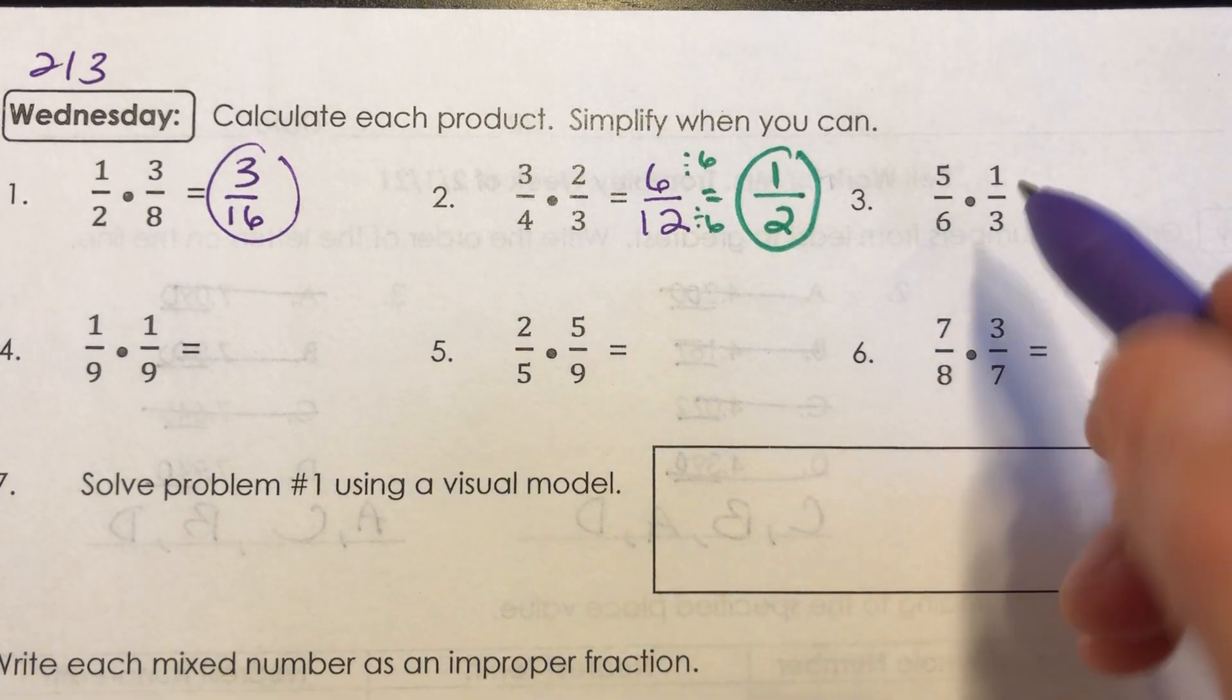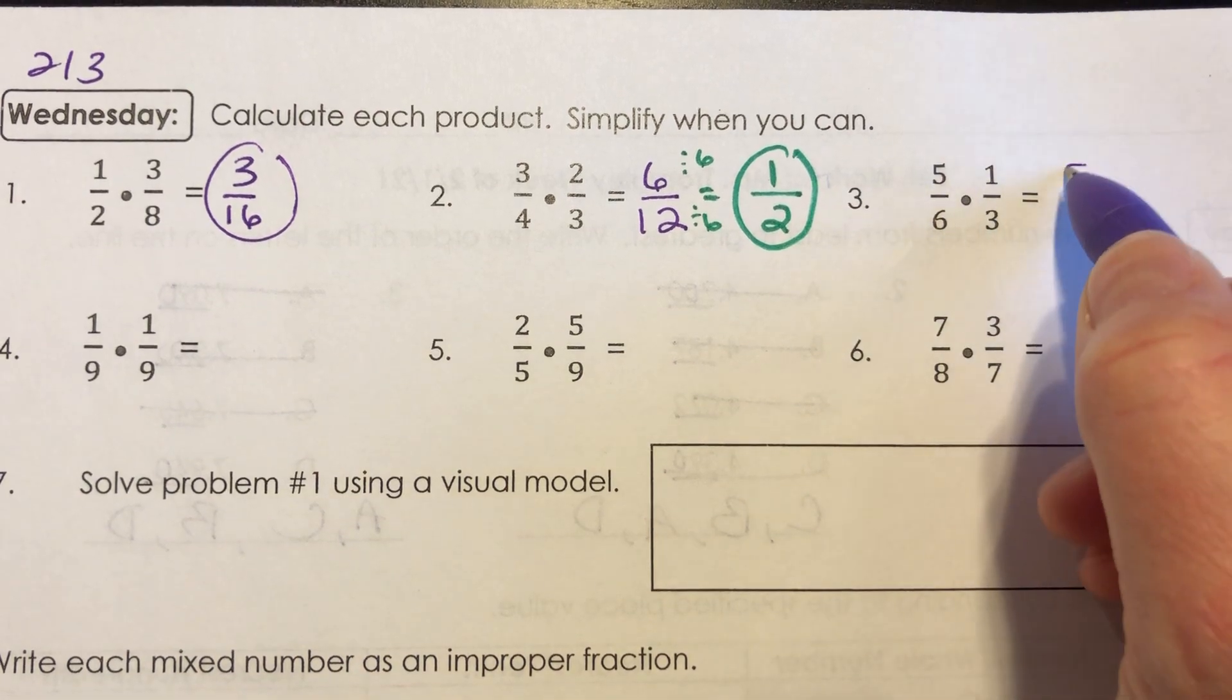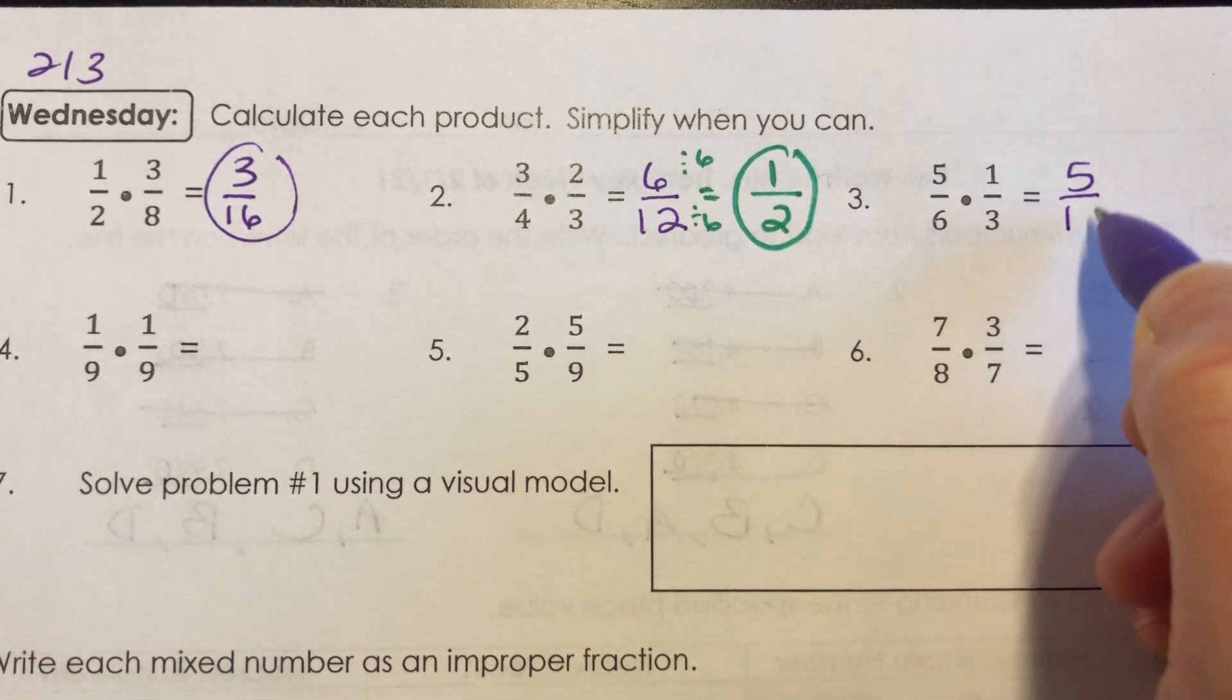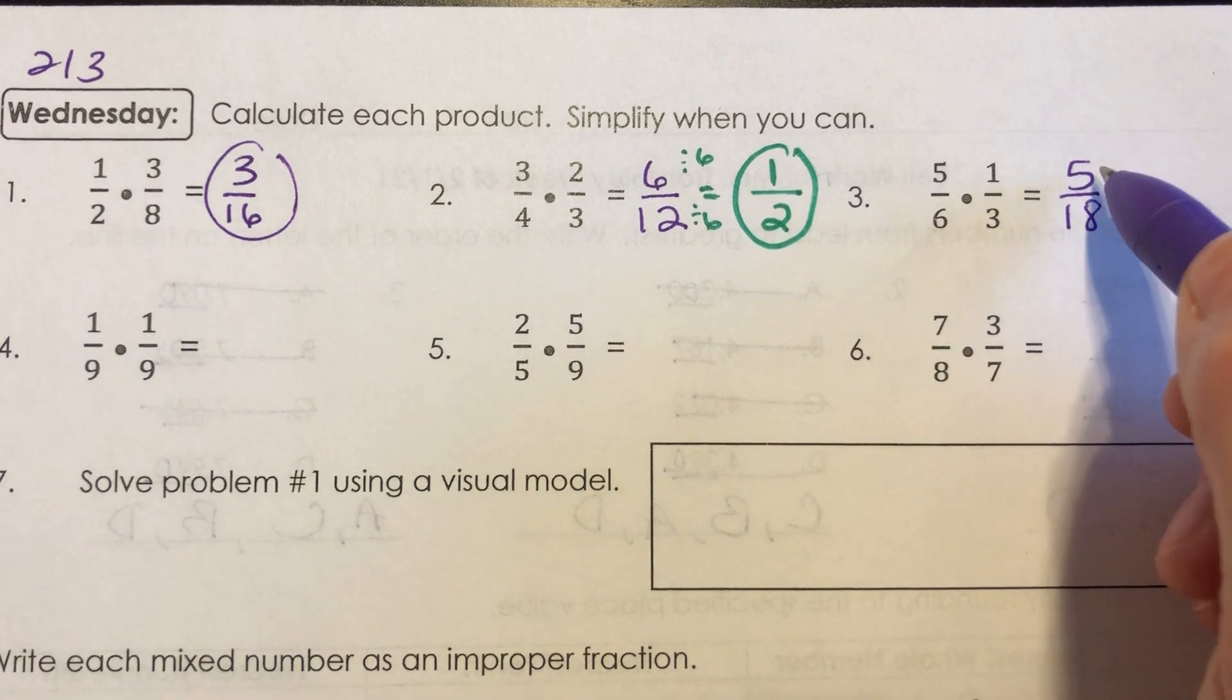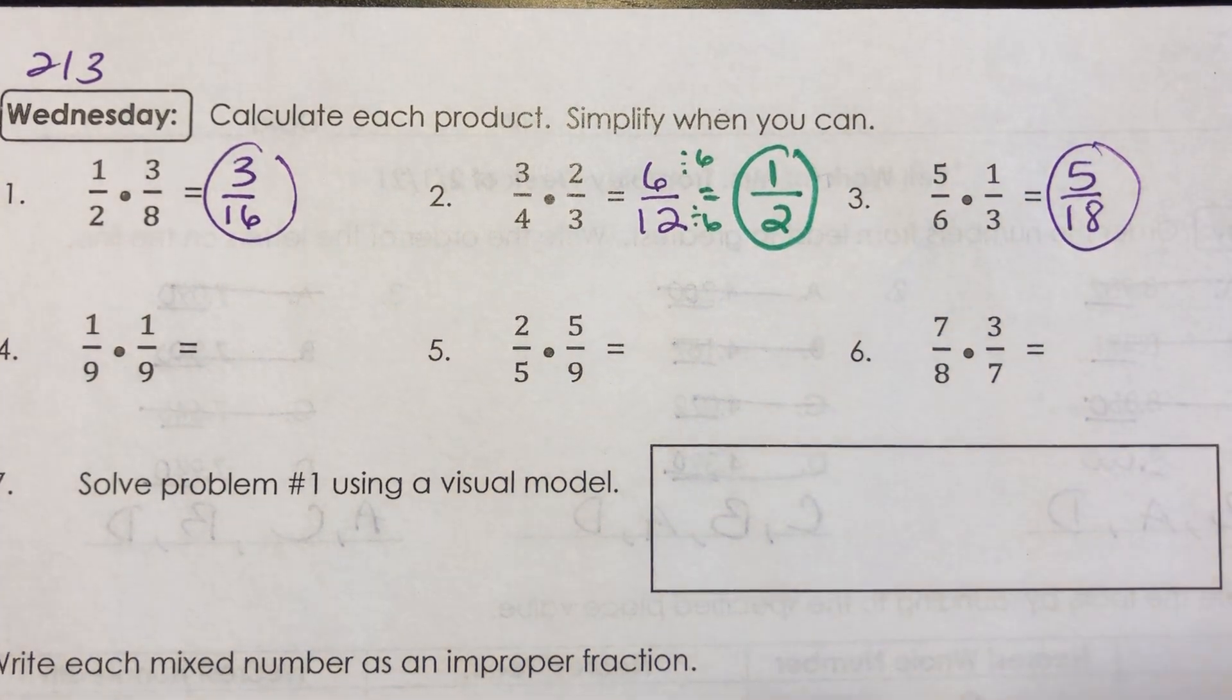For number 3, multiply across the top. 5 times 1 is 5, 6 times 3 is 18. And there is not a number other than 1 that goes into both of those, so that one is all set.